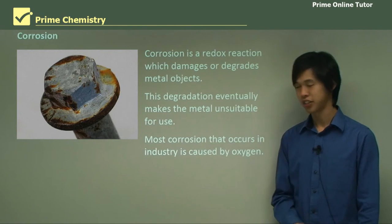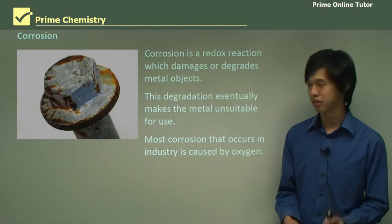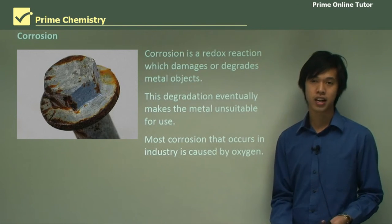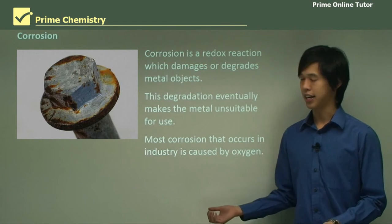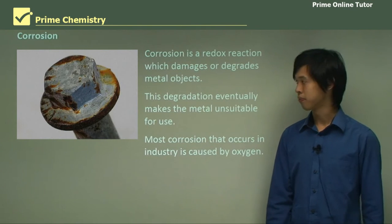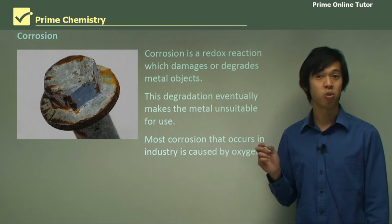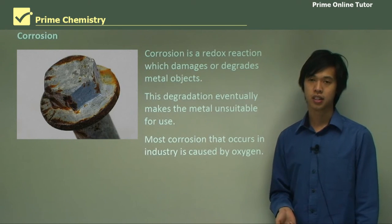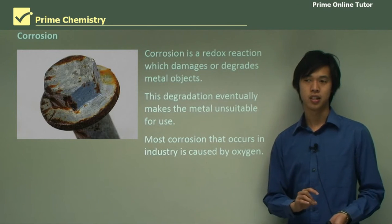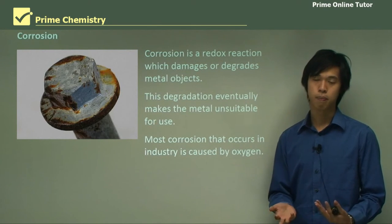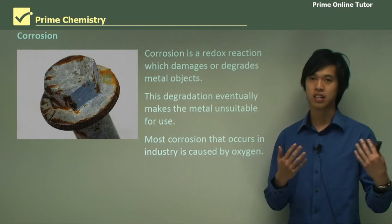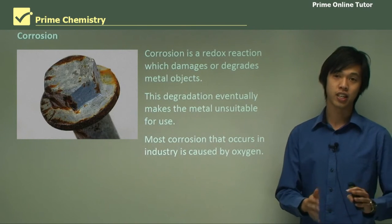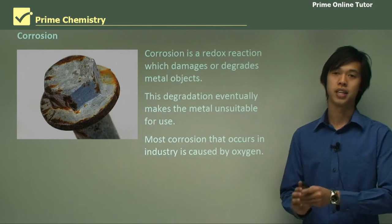Most corrosion that we see is caused by the presence of oxygen. So we have oxygen around, it reacts with things and causes corrosion. Corrosion applies to all metals. Any metal that experiences a reaction with oxygen, we call it corrosion. But for iron, we call that rusting. There's just a very subtle difference. Rusting only applies to iron, corrosion applies to everything.